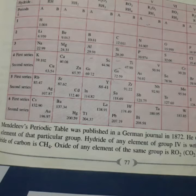It means when the elements are arranged in the increasing order of the atomic masses, the elements with similar properties are repeated after certain regular interval.